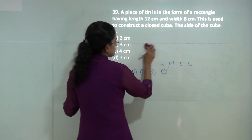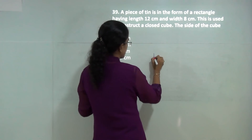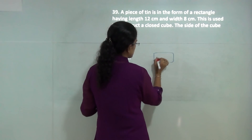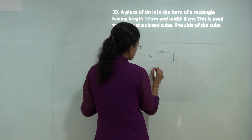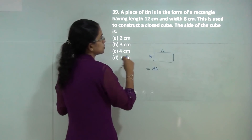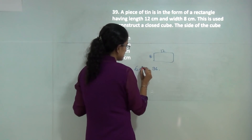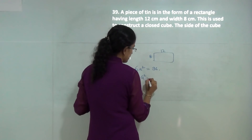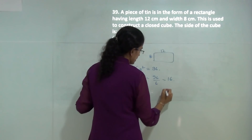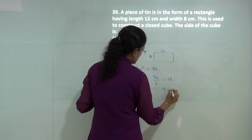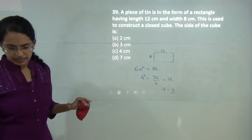Let us find the area of the rectangle, which is 12 times 8 equals 96. This equals the surface area of the cube, which is 6A squared. So A squared equals 96 divided by 6, which is 16. Therefore A equals 4. So 4 is the correct answer.